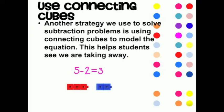In the problem 5 minus 2 equals 3, we have five cubes in all. Two cubes were taken away. These are the blue cubes. The number of cubes remaining, the red cubes, is the answer to our problem.